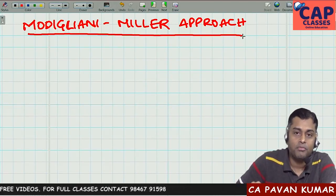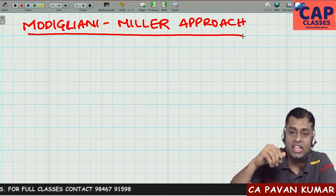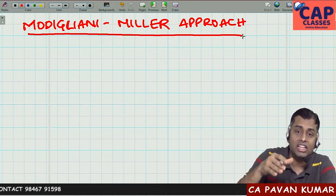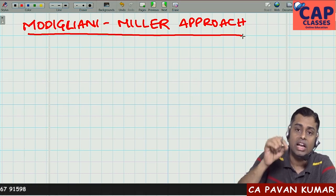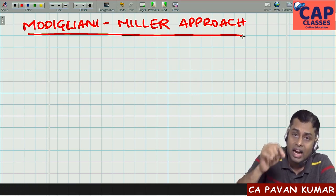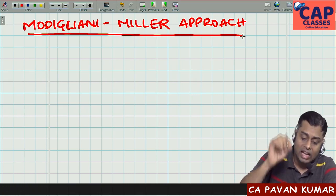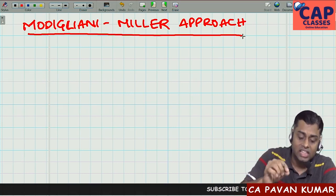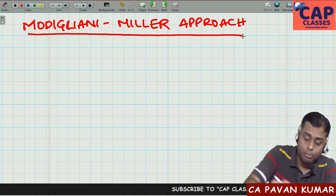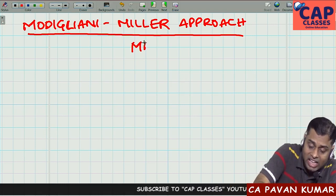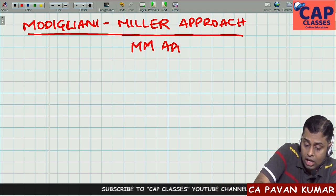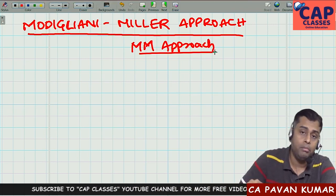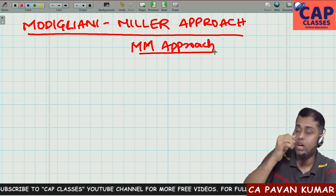Hi friends, good morning all, welcome back. We are discussing capital structure theories. We have discussed net income approach, net operating income approach, and traditional approach. The last and very important among all the capital structure theories is the Modigliani and Miller approach, popularly known as MM approach or MM hypothesis.